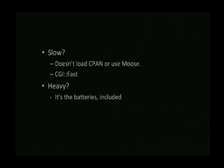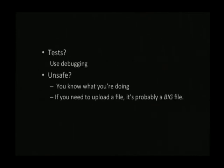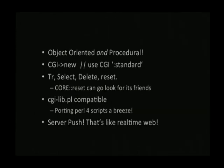There must have been a good reason for this. Now, assorted attacks against CGI.pm: it's slow. It doesn't load the entirety of CPAN. It doesn't use Moose. And there's also CGI::Fast, which is fast. It's heavy — it's batteries included. Tests, use debugging. Unsafe — if you really wanted to upload a file, it's probably a big file, you shouldn't be limited. It's both object-oriented and procedural. Certain keywords it injects, if you use the procedural interface, are identical to Perl keywords. Scary.